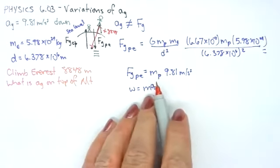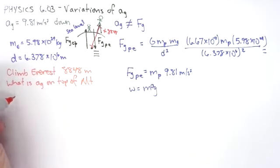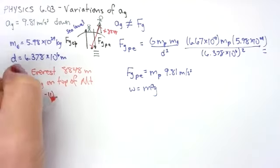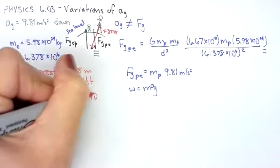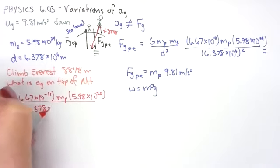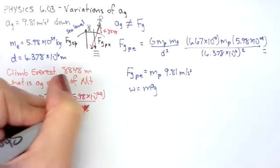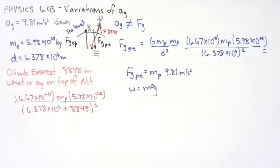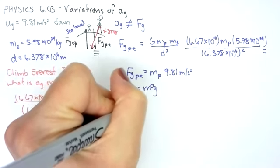To find my new value for a sub g, I'm going to do all of these the same. 6.67 times 10 to the minus 11th times the mass of the person times 5.98 times 10 to the 24th. But on the bottom, I'm going to have to add my distance, 6.378 times 10 to the 6th plus 8,848, and I'm going to square that. And when I do, I get a value of 9.77 meters per second squared.